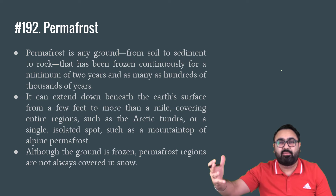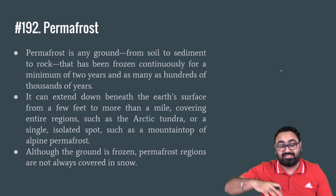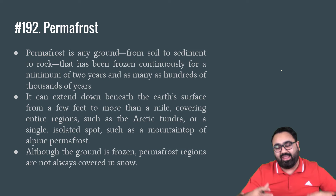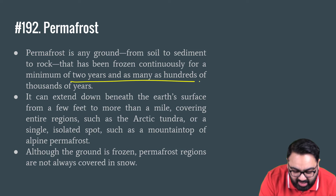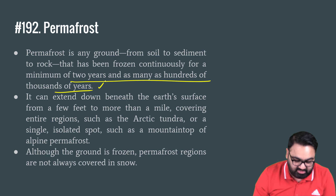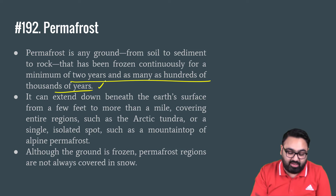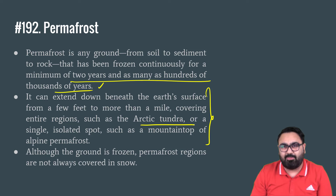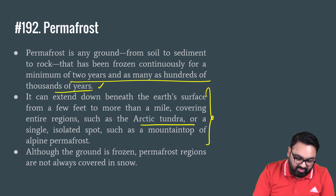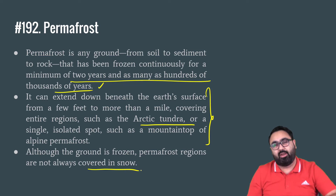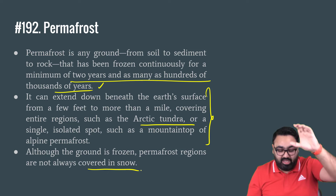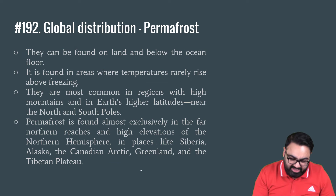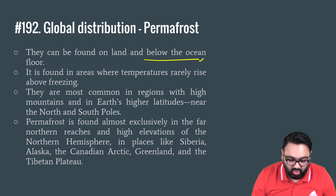Permafrost is now releasing carbon into the atmosphere because it is melting. How do you define permafrost? It is basically a block of ice that has been permanently frozen for a minimum of two years and can remain frozen for up to thousands of years. It can be a few feet deep and can be more than a mile deep, as we see in the Arctic. Although the ground is permanently frozen, the surface on top may not always be covered in snow — underneath it, however, you might have one mile of just frozen ice. It can be found on land and below the ocean floor as well.